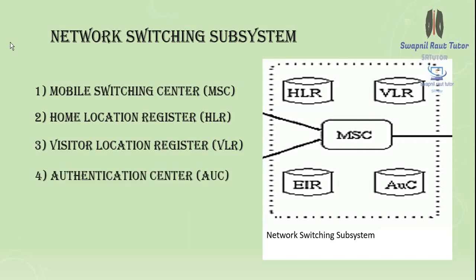The AUC, or Authentication Center, is used for security purposes. It contains algorithms for authentication as well as keys for encryption. Authentication is a process to verify whether a subscriber is valid or invalid. It protects network operators from fraud and is situated in a specially protected part of the HLR.